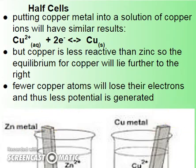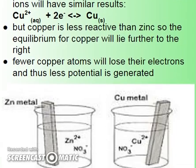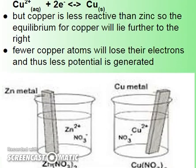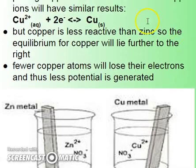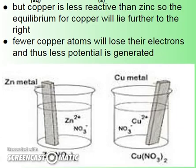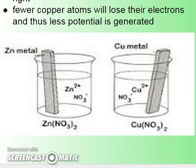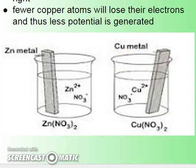You need another half cell to make a complete cell or battery. If we put copper metal into a solution of copper ions, the same thing occurs: some copper ions gain electrons to become copper metal, and some copper atoms give up electrons to become copper ions, creating an electric potential on the copper as well. But since copper is less reactive than zinc, the equilibrium lies further to the right — there will be fewer ions and less potential generated. When we connect these two cells with a wire, electrons flow from the higher-potential zinc metal, where more electrons are piling up, to the copper metal where there are fewer electrons.